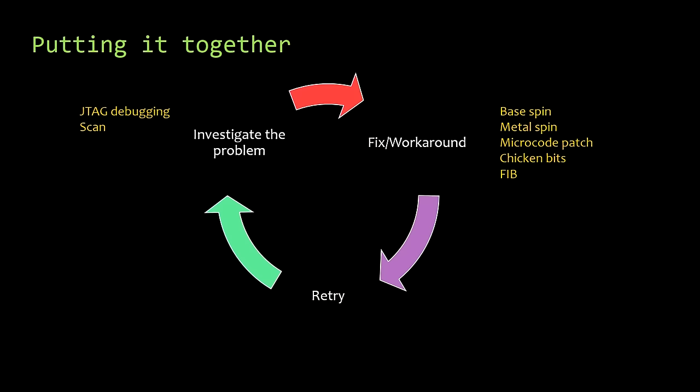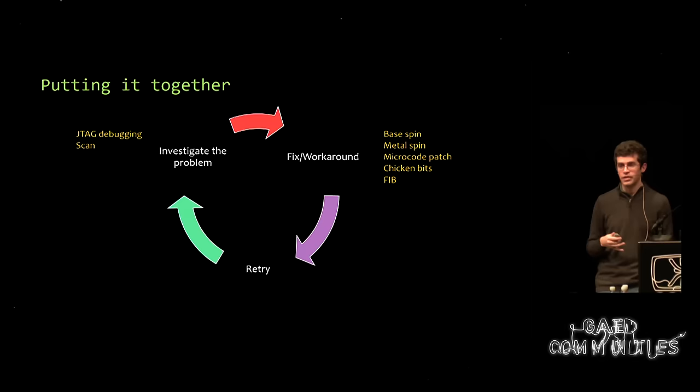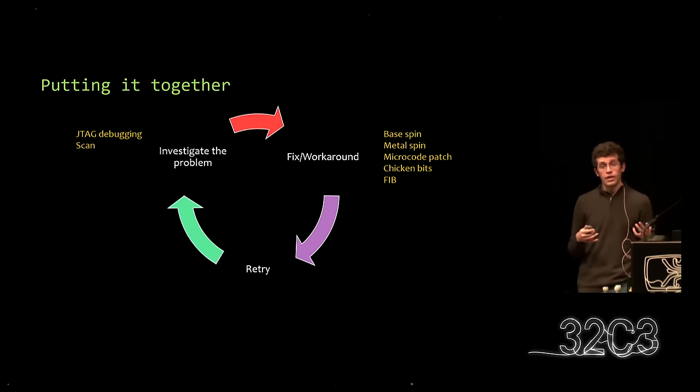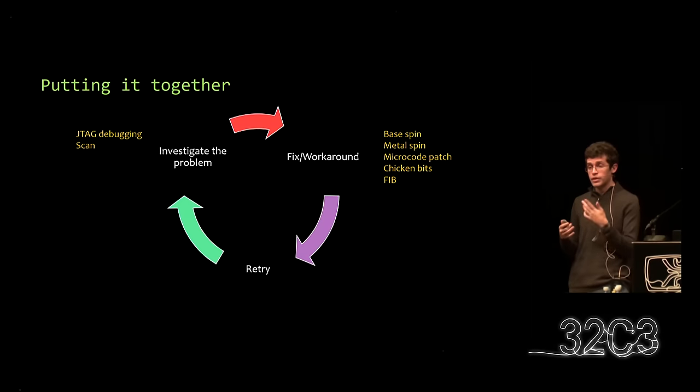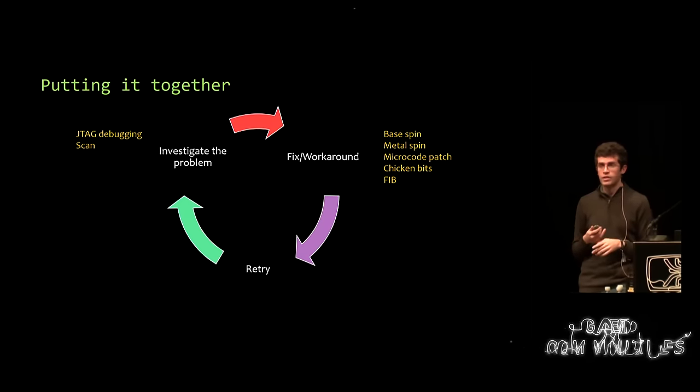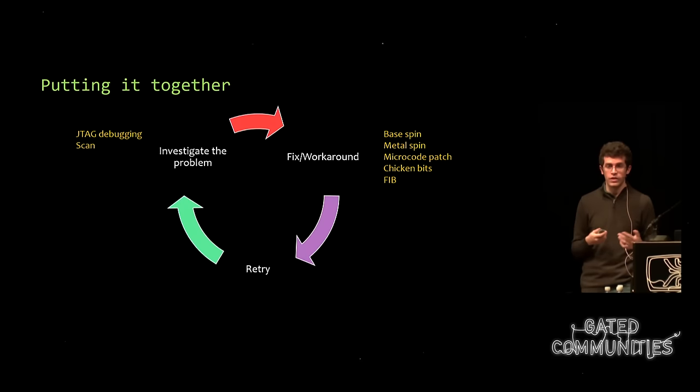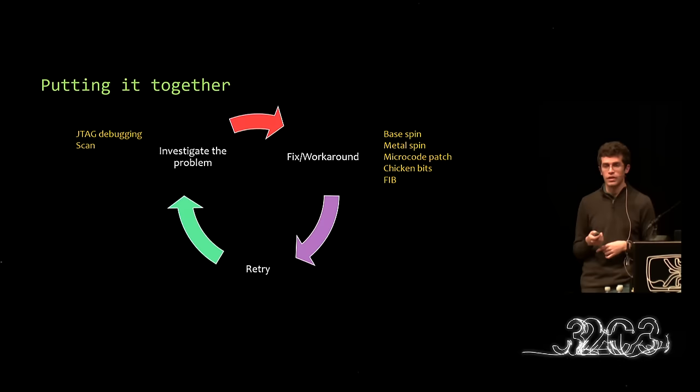Putting this all together: when dealing with hardware, we've talked about JTAG debugging and scan dumps as two ways to identify a problem. When it comes to fixing things — and I use workaround as well because sometimes you've got to get stuff out the door — you have silicon spins, you have microcode patch, you have chicken bits, and if you need a quick fix, you can always get a FIB done.